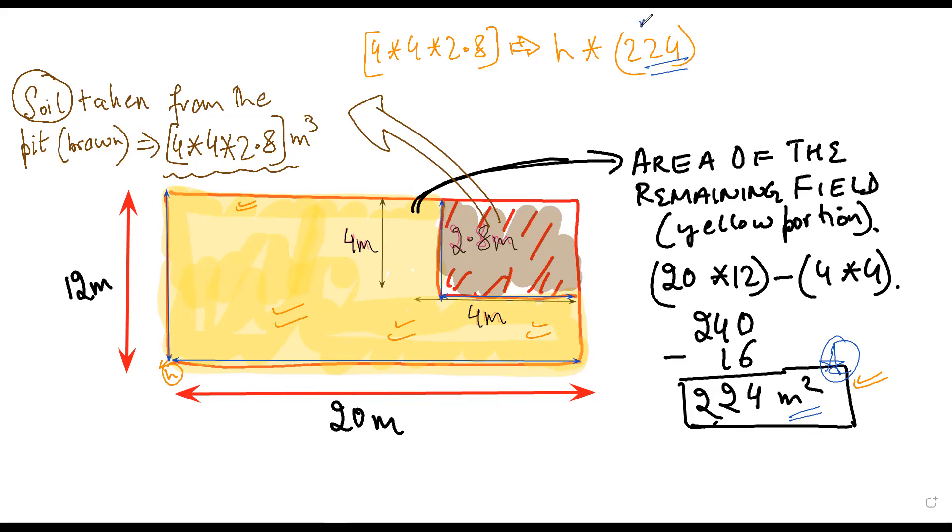This is in meters square. Now whatever earth is spread over this yellow field, that will increase the height by h meters, and the volume of the earth would be equal to this much meter cube. Is it making sense?